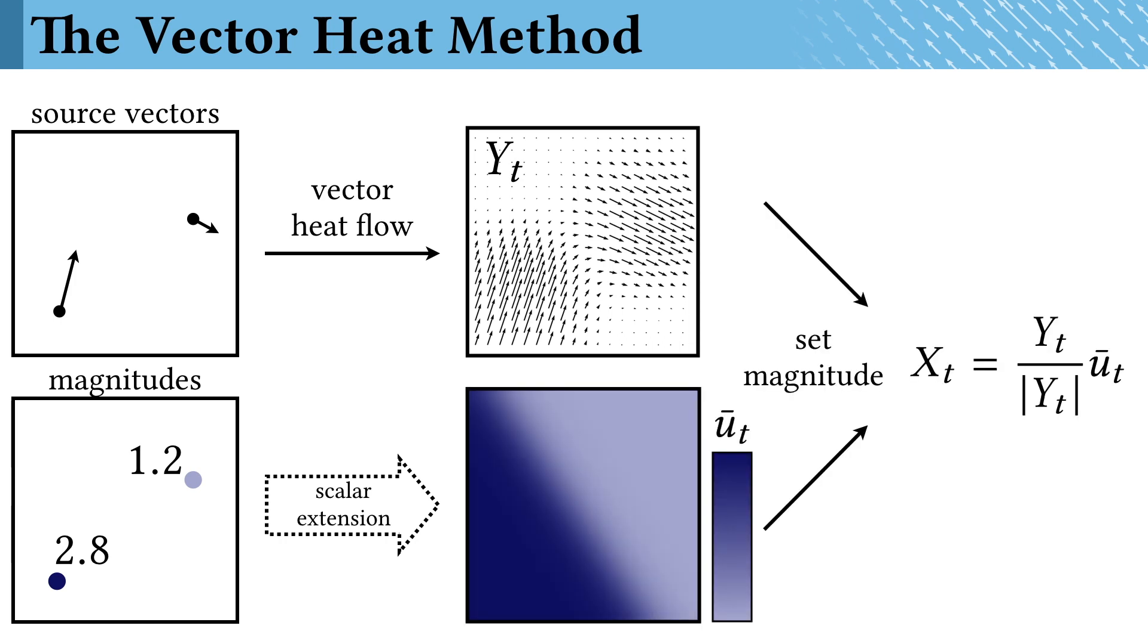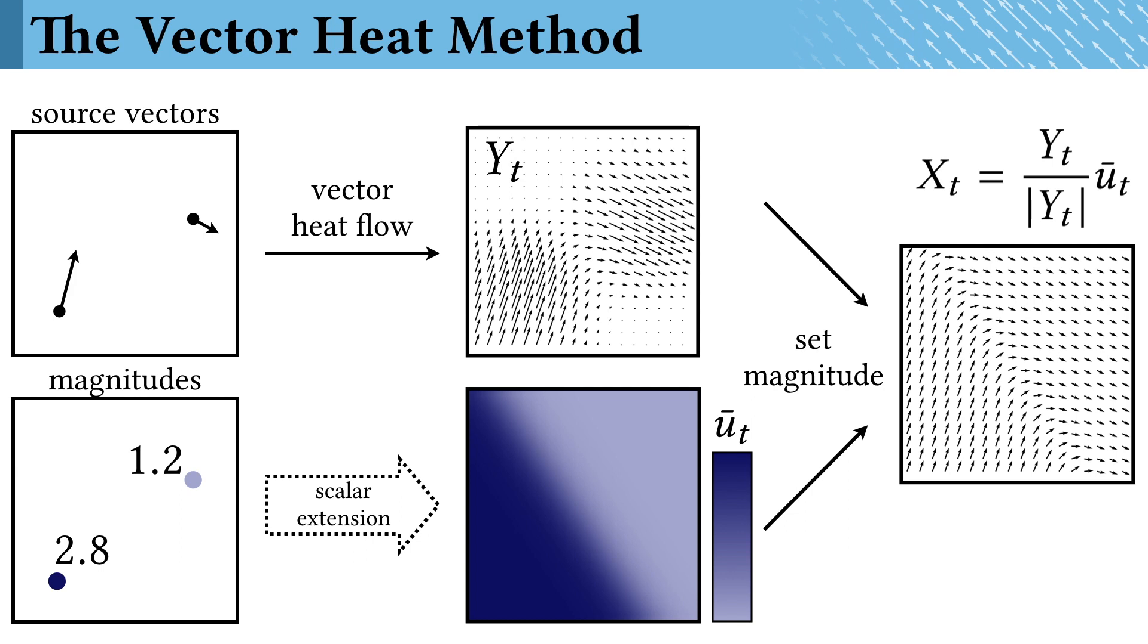We then scale the field from the first step to have these extended magnitudes. This yields the vector field on the right, which is amazingly the parallel transport along shortest geodesics from the nearest source point. We dubbed this process the vector heat method.